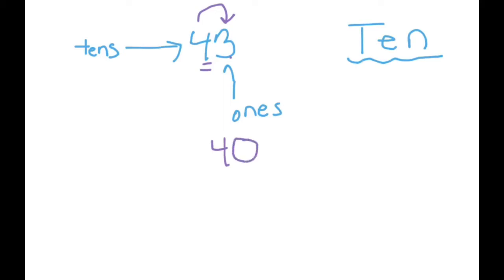Whenever you are looking for a place value, you're looking at the specific place. And when you figure out what that number should be, all other numbers change to a zero. So let's practice it again.